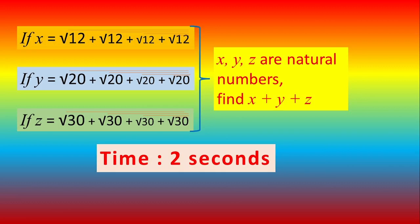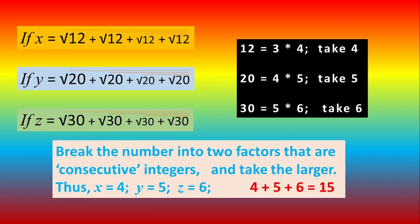Now let us see how to do this trick. We break each of the numbers into two consecutive integer factors and take the larger number. We are taking the larger number because there is a plus sign; if it is a minus sign then you would be taking the smaller number.